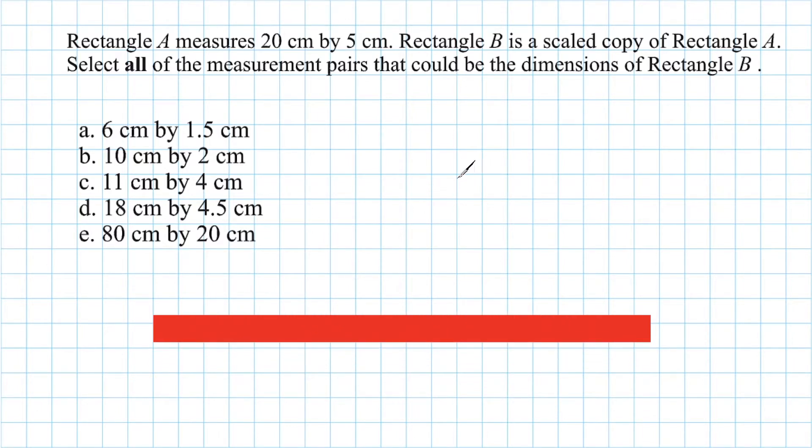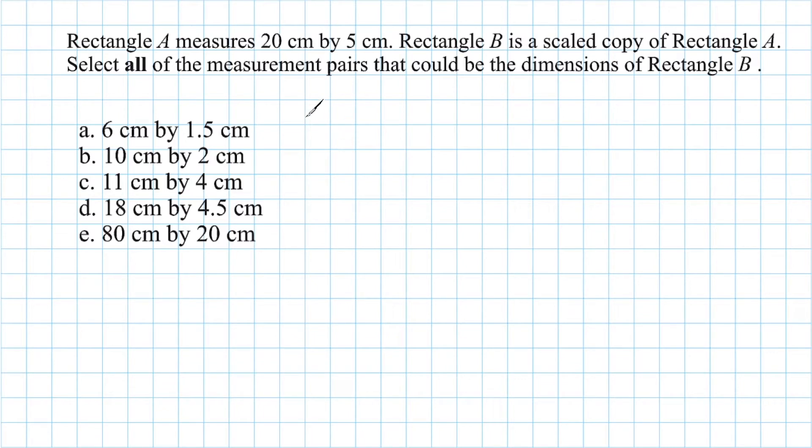This problem reads that rectangle A measures 20 centimeters by 5 centimeters. Rectangle B is a scaled copy of rectangle A. Select all the measurement pairs that could be dimensions of rectangle B.